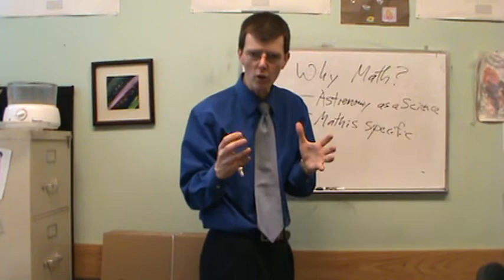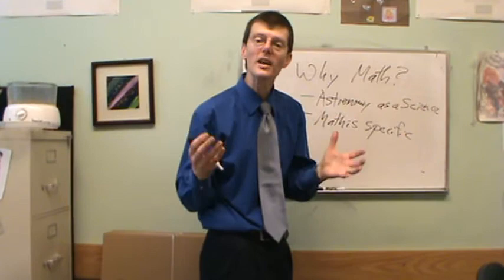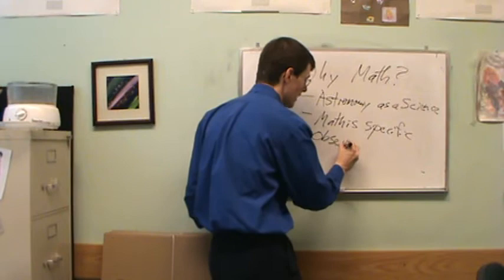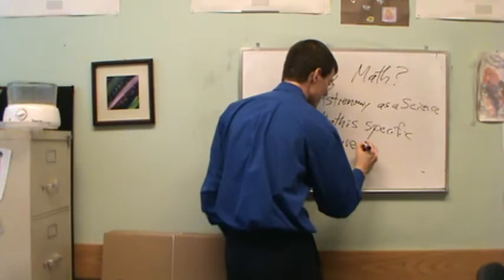When any scientist observes the natural world, we're measuring specific numbers. So in the sciences we observe the natural world. That's an essential part of what the sciences are. When we observe, we're measuring things.